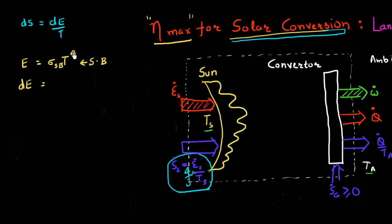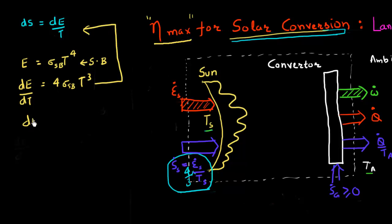When I take the derivative dE with respect to temperature, I get a coefficient of four and a temperature power of three. So dE = 4σT³ dT. Now I can plug that into the entropy equation dS = dE / T. Substituting in, I get a relationship which relates my entropy flux to the temperature, giving me T³ / T = T². So the entropy derivative with respect to temperature goes as T squared.